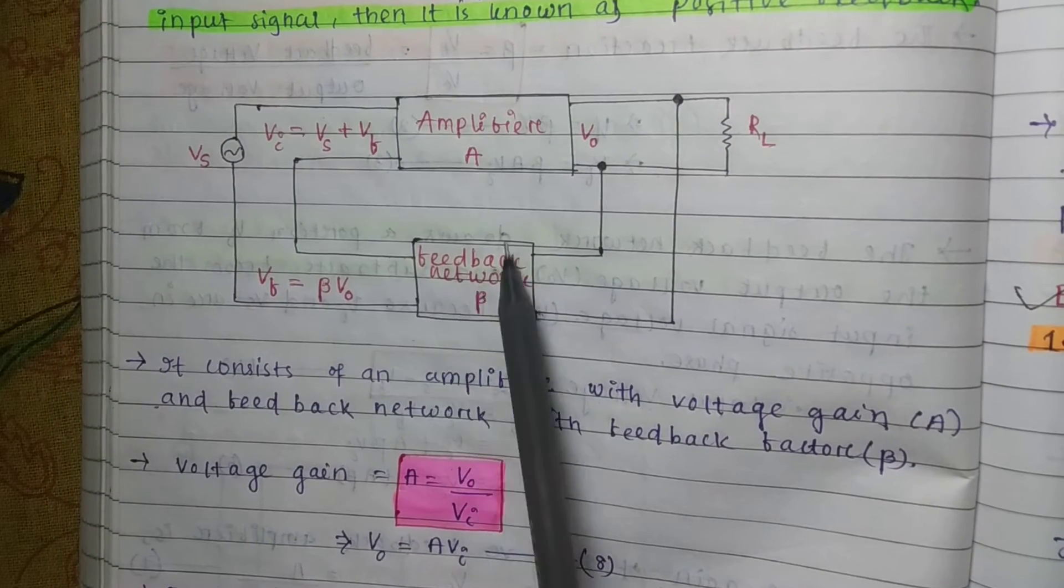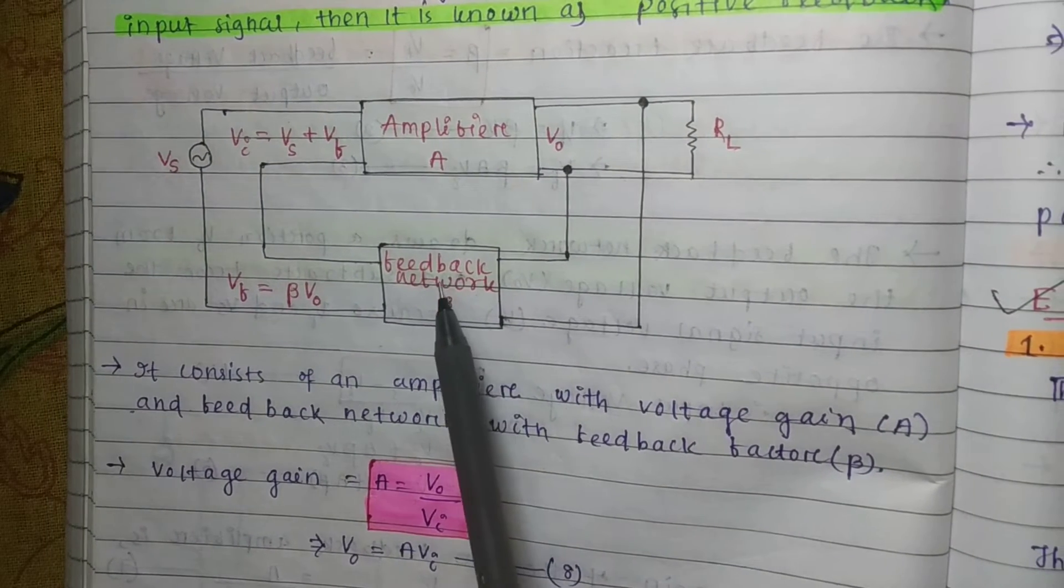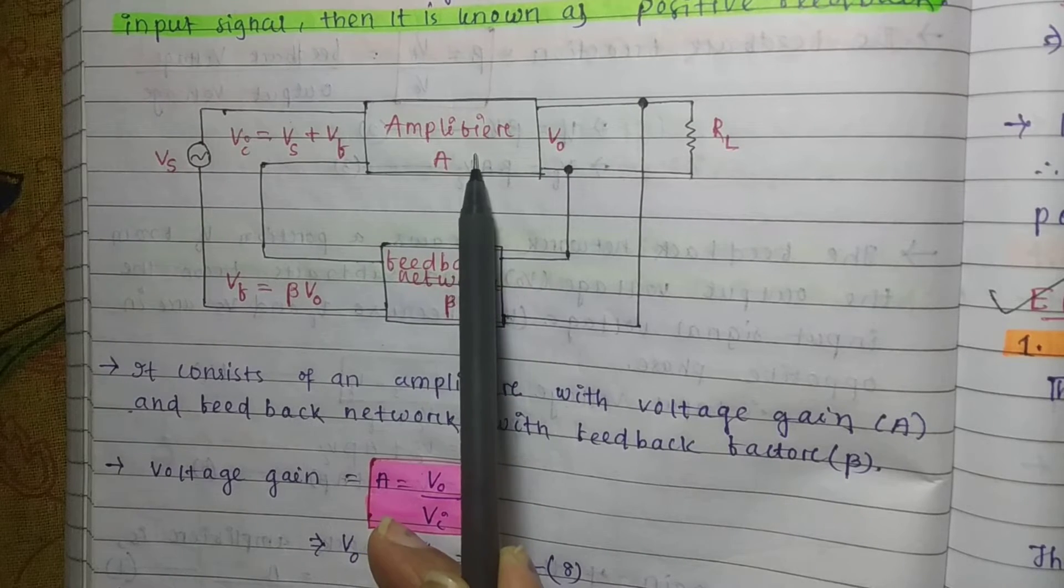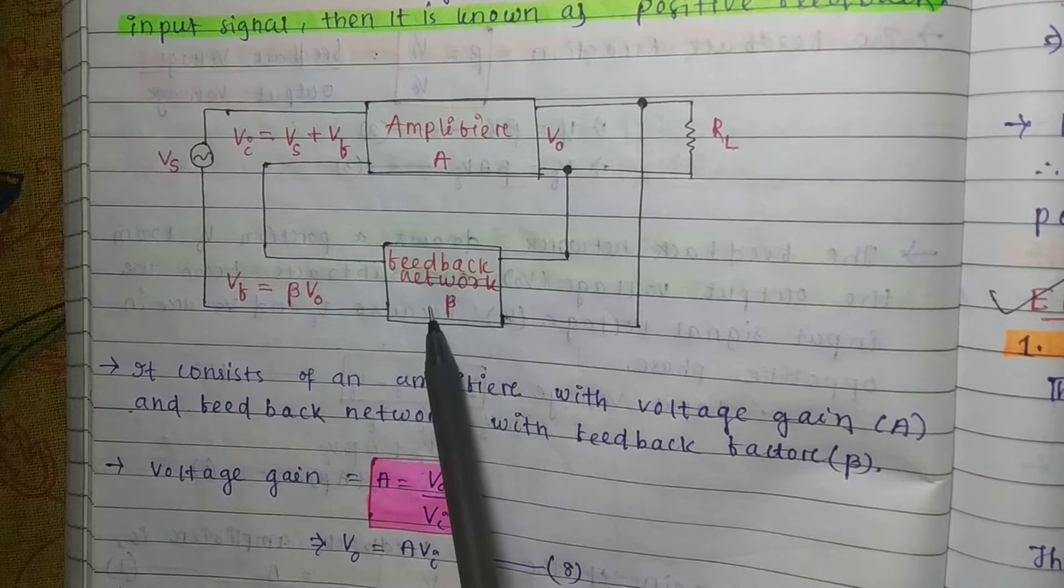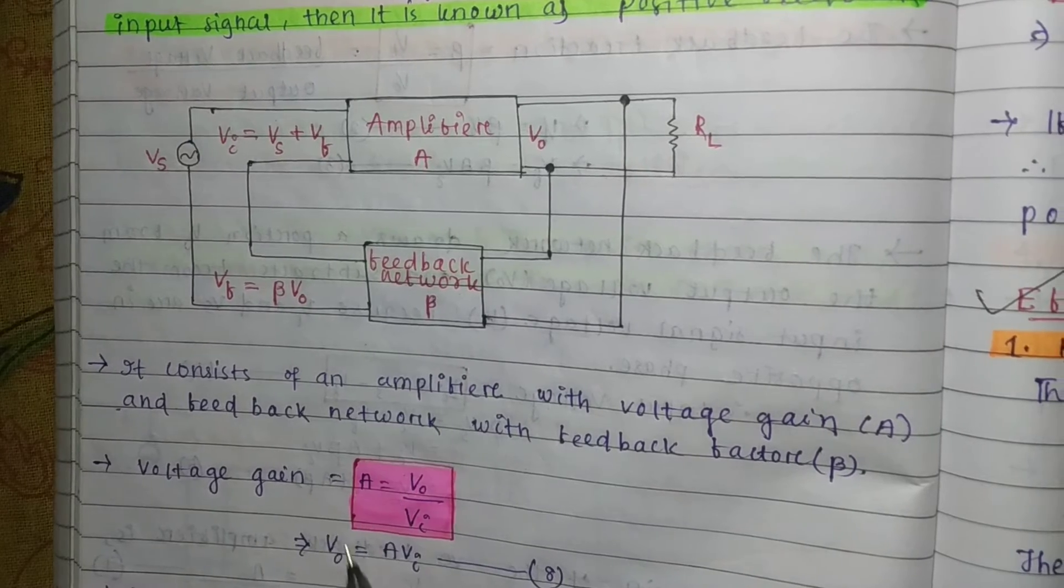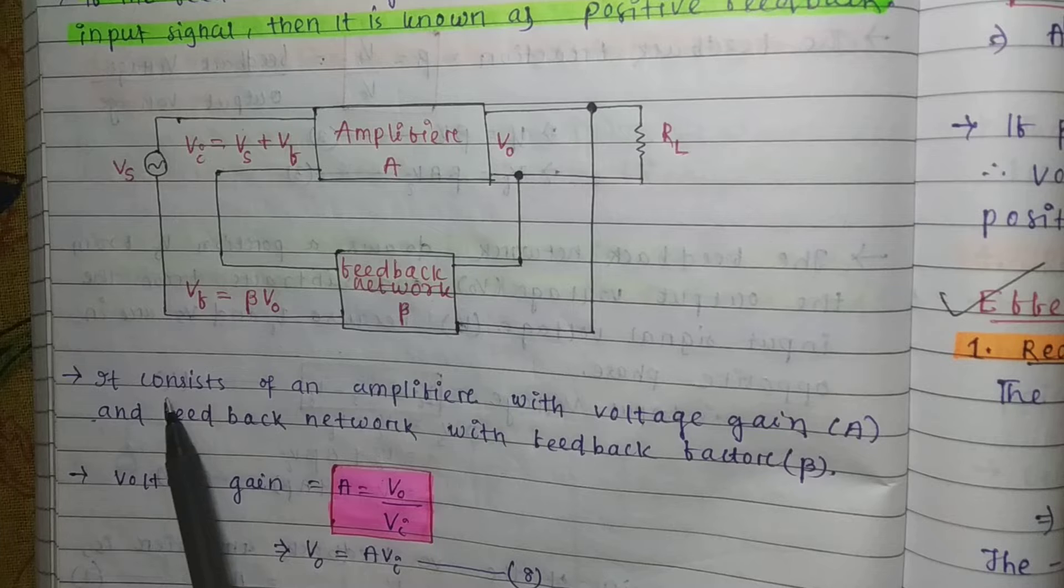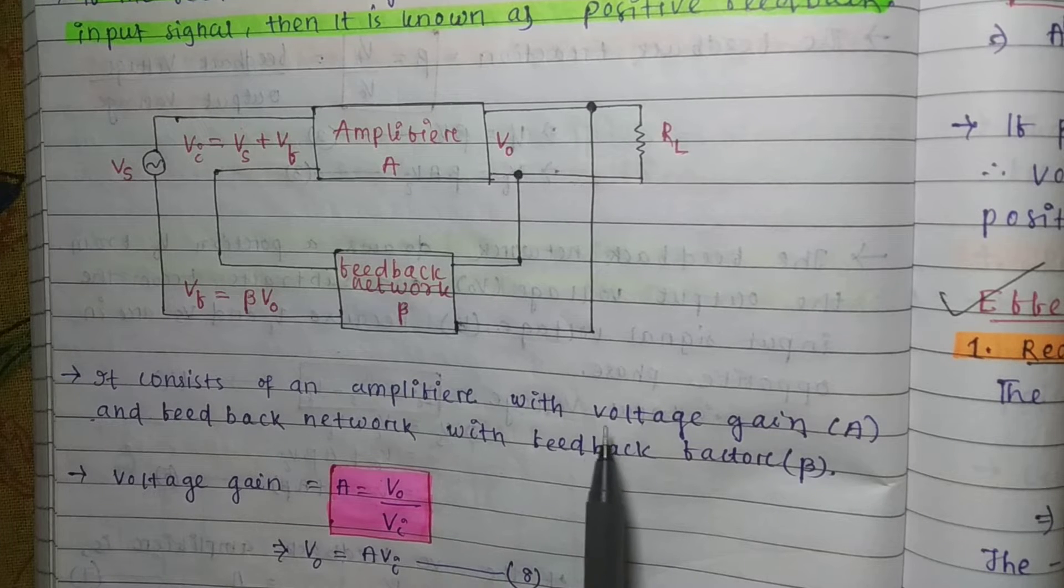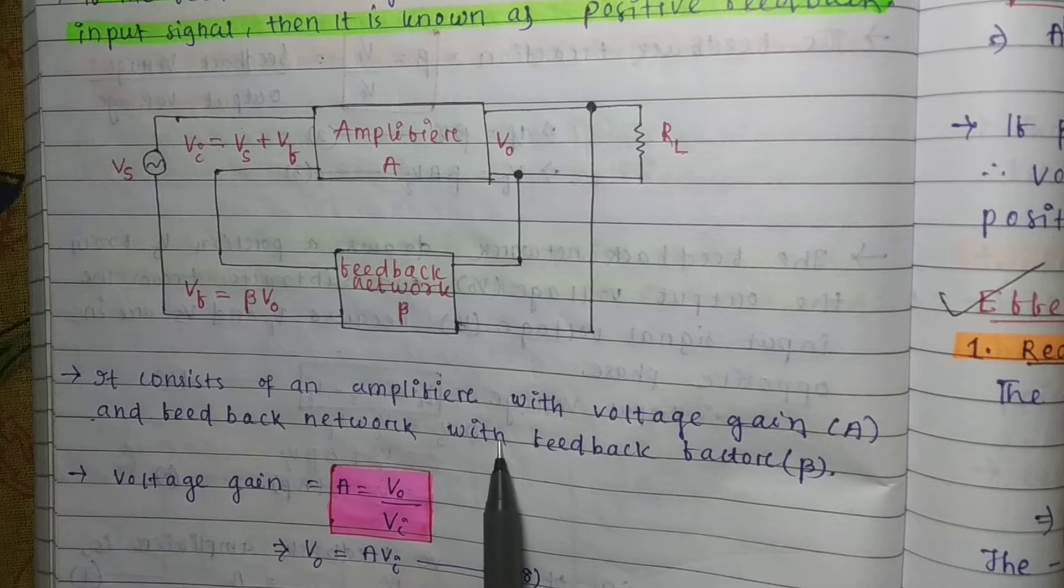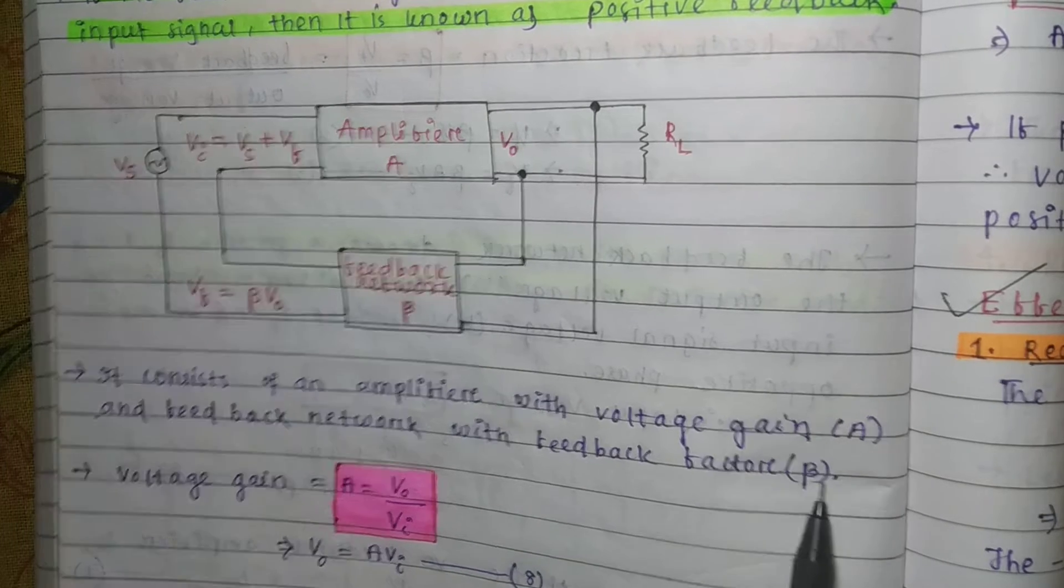Here is the block diagram of positive feedback amplifier with voltage gain A and feedback network with feedback factor beta. It consists of an amplifier with voltage gain A and feedback network with feedback factor beta.